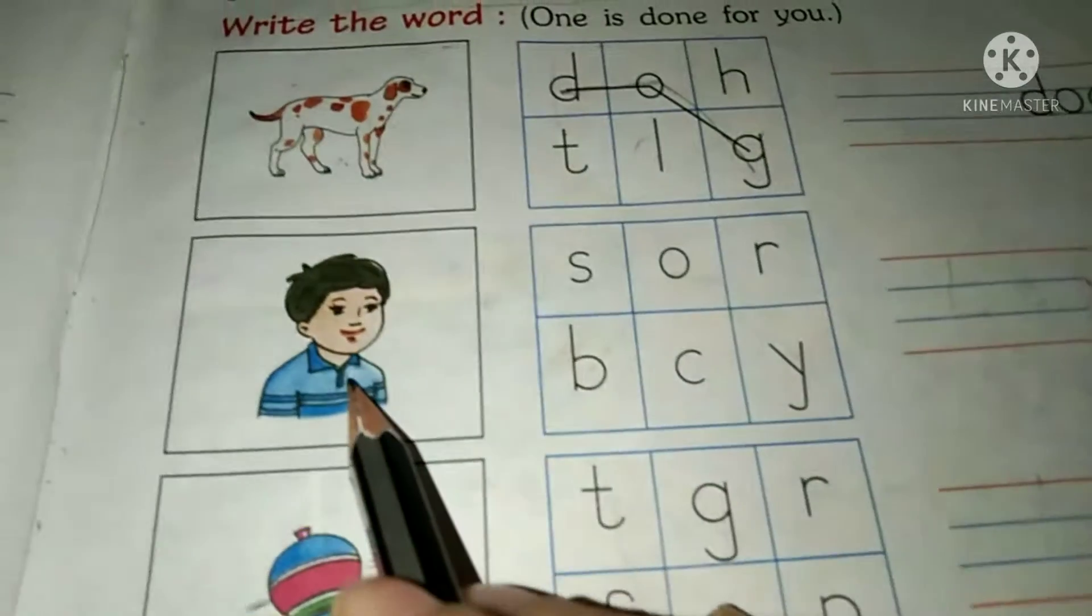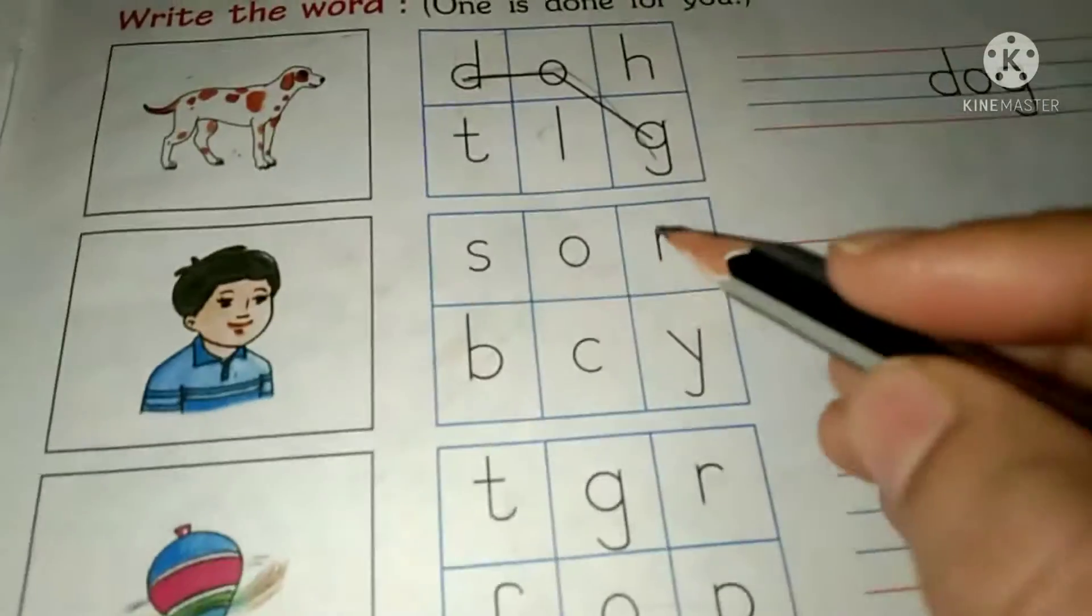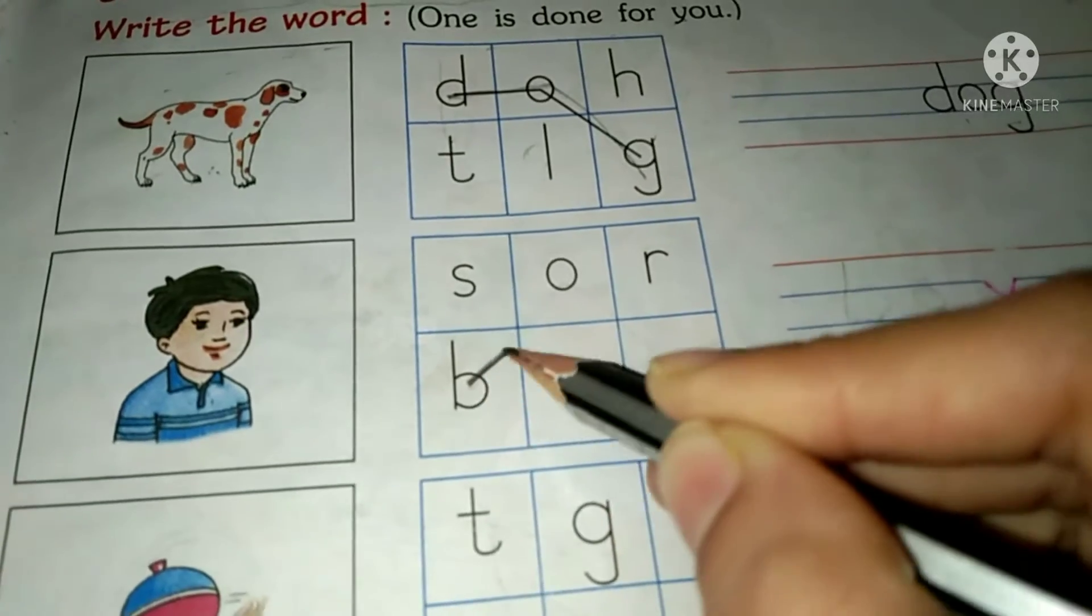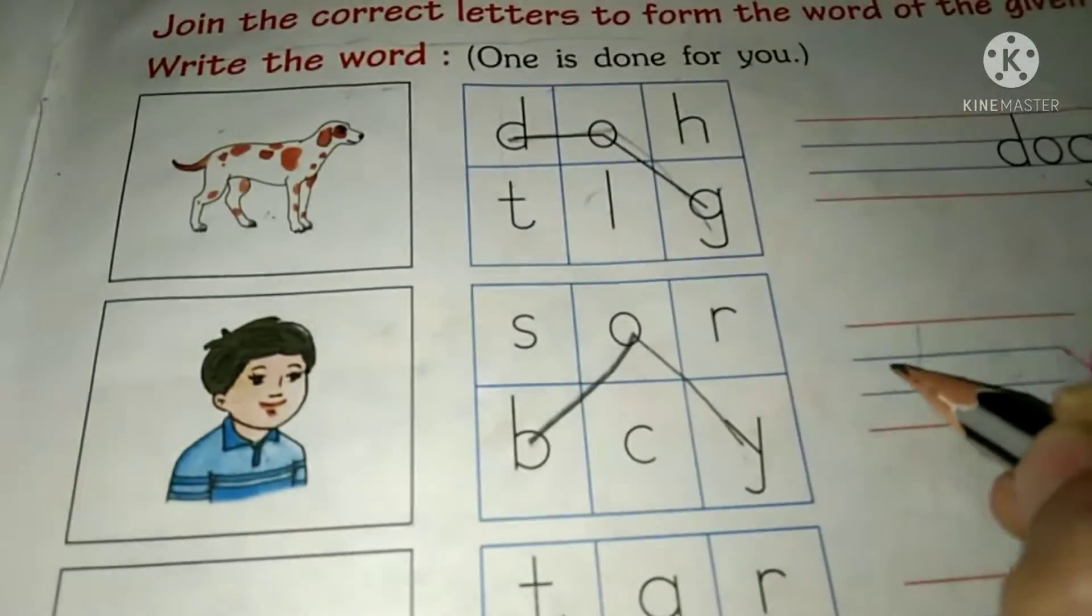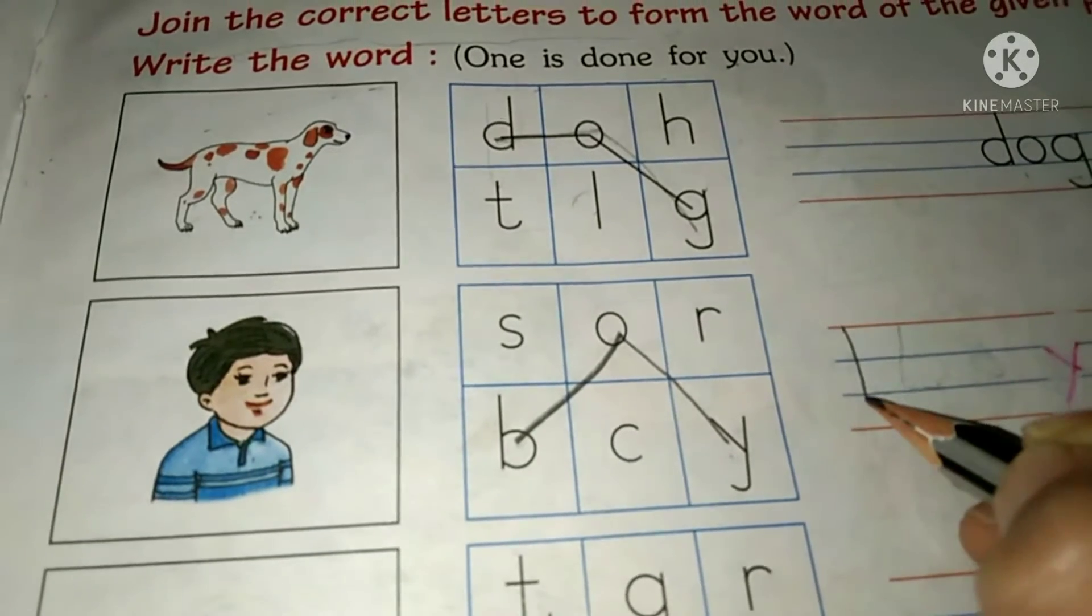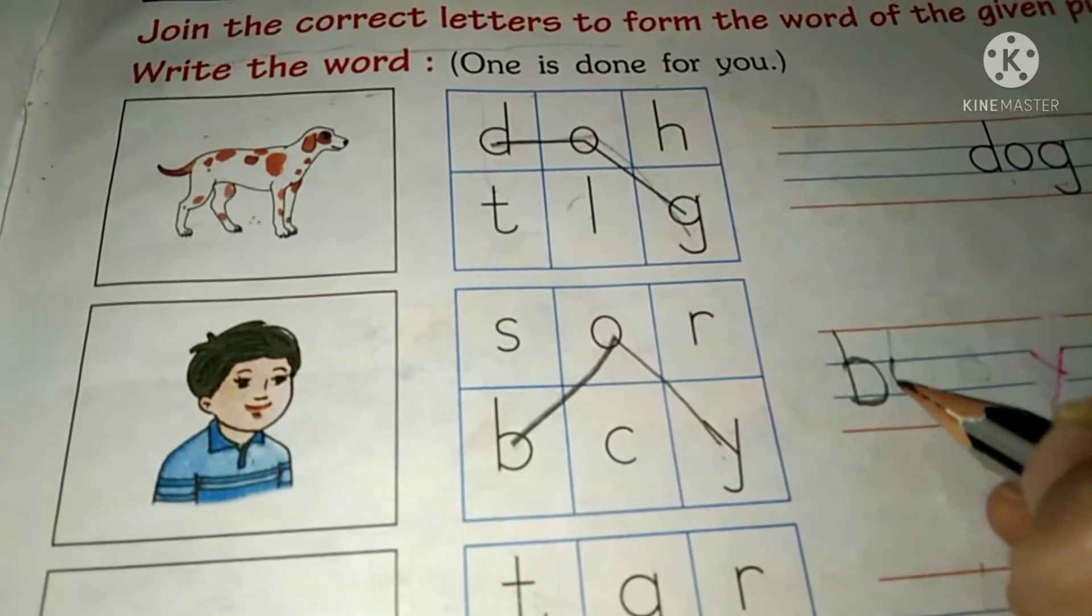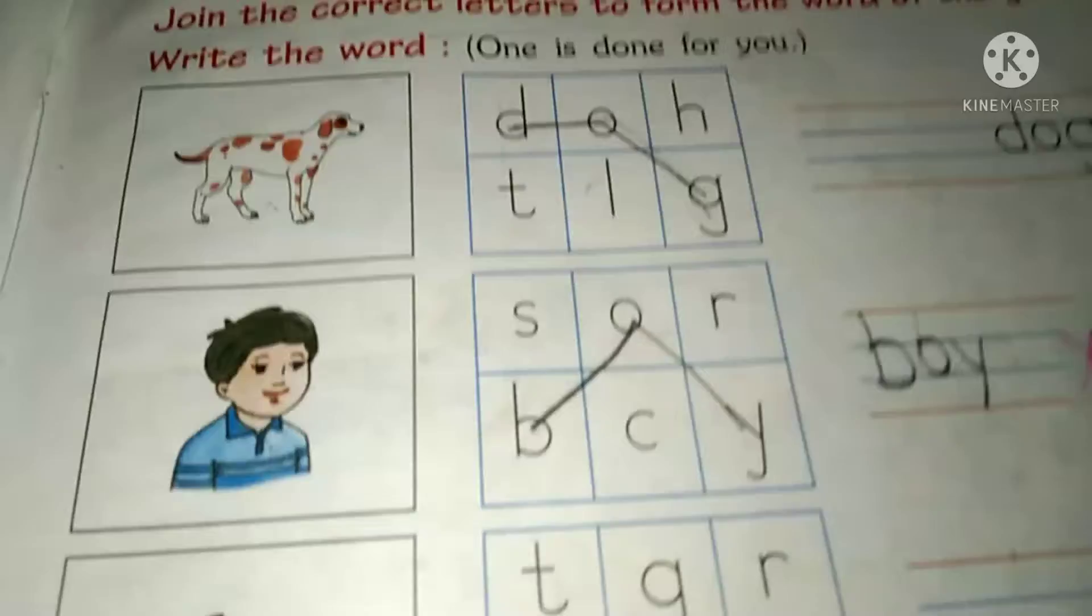The next one is boy. Yes. So, letters do it. B-O-Y-Boy. Let us write it over here. B-O-Y-Boy.